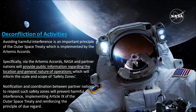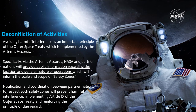The deconfliction of activities. We talked about avoiding harmful interference, which was one of the tenets of the Outer Space Treaty, and that is further implemented by the Artemis Accords. Both NASA and partner nations are agreeing to provide public information regarding the location, the nature of operations, and the scale and scope of what we call safety zones. This allows us to deconflict our activities with other partner nations.